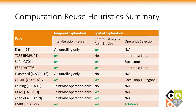This slide summarizes the computation reuse heuristics used in this work and in previous works. We can see that HSBR is the only one that can explore inter-iteration reuse, considers different computation orders of reduction operations, and selects operands in arbitrary directions.